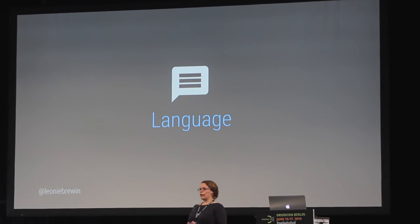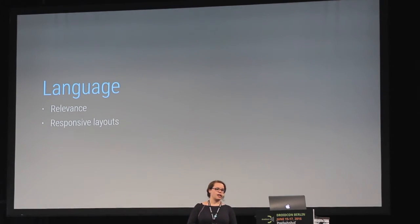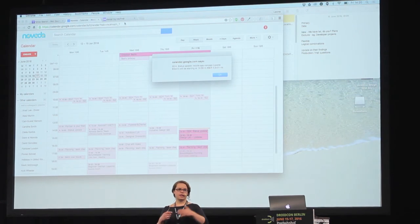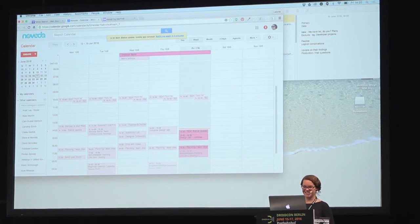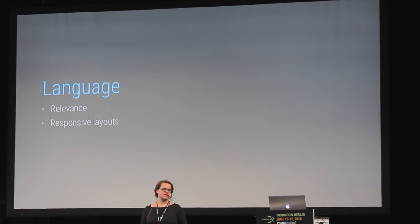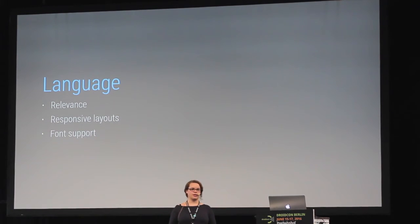We also have language. Ideally we'll make sure our applications cater for as many languages as possible, but of course they need to be relevant to our use cases. It's worth considering language in the design process because for languages with potentially longer words we need to make sure our layouts are responsive enough that text can wrap accordingly. It's also worth thinking about font support — if you have a particular font and you've chosen to support various languages, you need to make sure that font can actually support them.